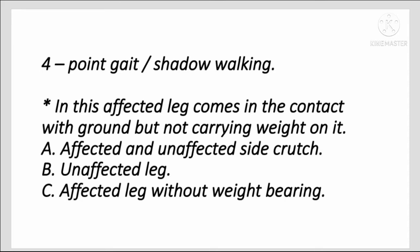4-Point Gait pattern, also called shadow walking: in this, the affected leg comes in contact with the ground but does not carry weight. Sequence: first affected side crutch, then unaffected side crutch, then unaffected leg, then affected leg without weight bearing.